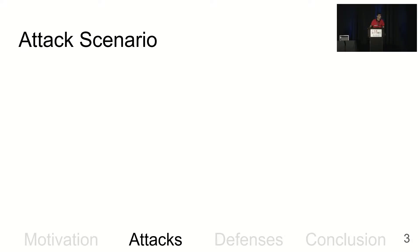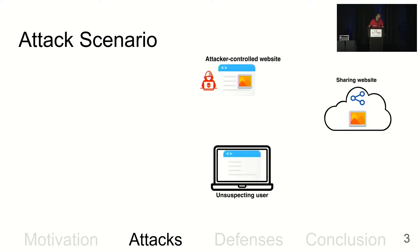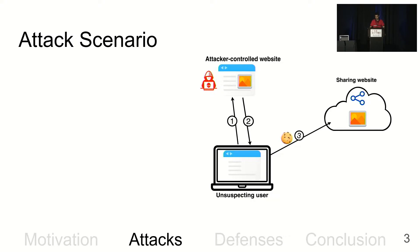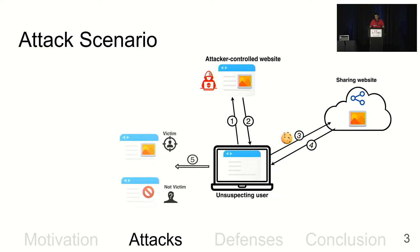The attack consists of two phases. In the setup phase, the attacker uploads a resource to a sharing website, shares this resource privately with the victim, and embeds this resource in an attacker-controlled webpage. In the execution phase, the attacker lures the victim to visit the website. When browsing this page, the victim's browser makes a request to the sharing service, passing the user's authentication cookies, and the sharing service responds based on the credentials. This response contains the shared resource if the user is the target, or otherwise does not.